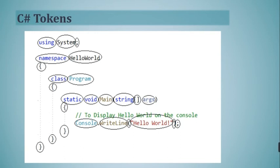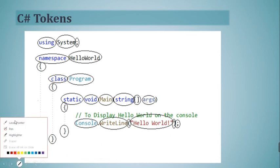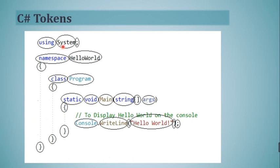For example, 'using' is encircled, 'System' is encircled, the semicolon is encircled, 'namespace' is encircled, 'HelloWorld' is encircled, the left curly bracket is encircled, 'class' is encircled, and 'Program' is encircled. All words and elements appearing in a program are encircled and these are called tokens in C# programming language — these are the smallest elements of a C# program.